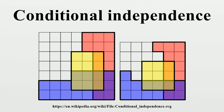Uses in Bayesian inference: Let P be the proportion of voters who will vote yes in an upcoming referendum. In taking an opinion poll, one chooses N voters randomly from the population. For i equals 1 to N, let C_i equal 1 or 0 according as the i-th chosen voter will or will not vote yes. In a frequentist approach to statistical inference, one would not attribute any probability distribution to P and one would say that X1 through XN are independent random variables. By contrast, in a Bayesian approach to statistical inference, one would assign a probability distribution to P regardless of the non-existence of any such frequency interpretation, and one would construe the probabilities as degrees of belief that P is in any interval to which a probability is assigned. In that model, the random variables X1 through XN are not independent, but they are conditionally independent given the value of P.